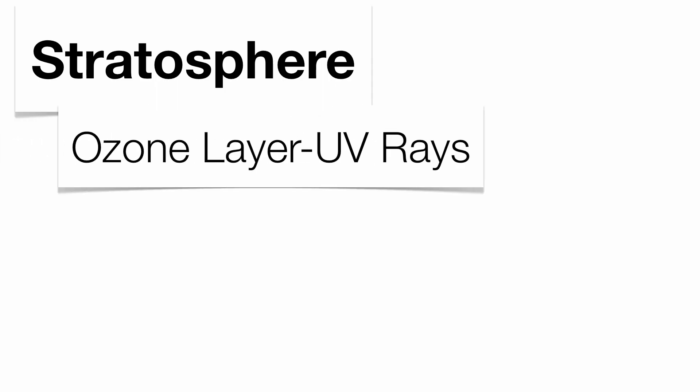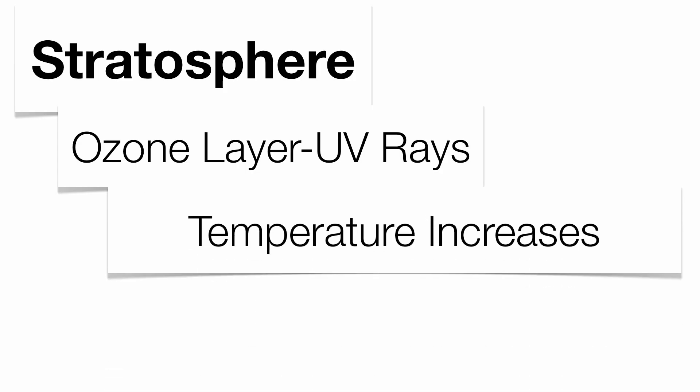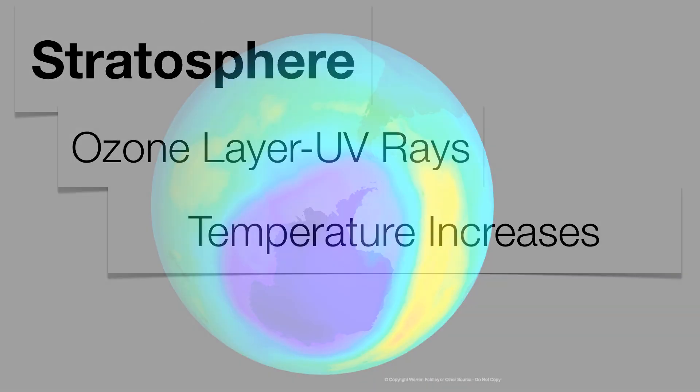The next layer up is the stratosphere. The stratosphere is super important because it houses what's called the ozone layer. The ozone layer is a special part of the stratosphere that protects us from the ultraviolet radiation from the sun, which is shortwave radiation that scientists believe causes high cases of skin cancer. As you travel up through the stratosphere, temperature actually goes up — even though you're getting further away from the Earth — because the ozone layer is absorbing a lot of the sun's energy, causing temperature to increase.